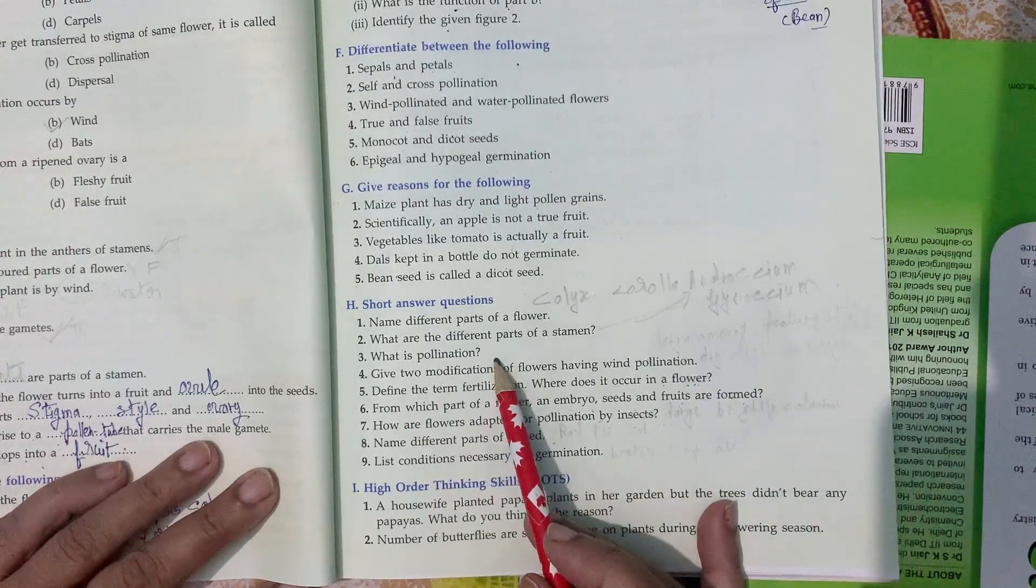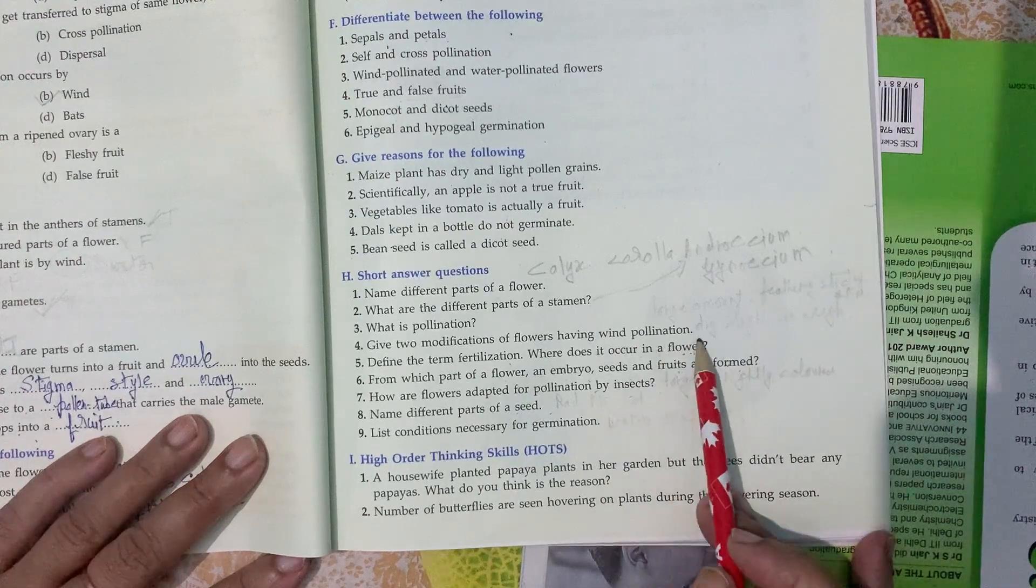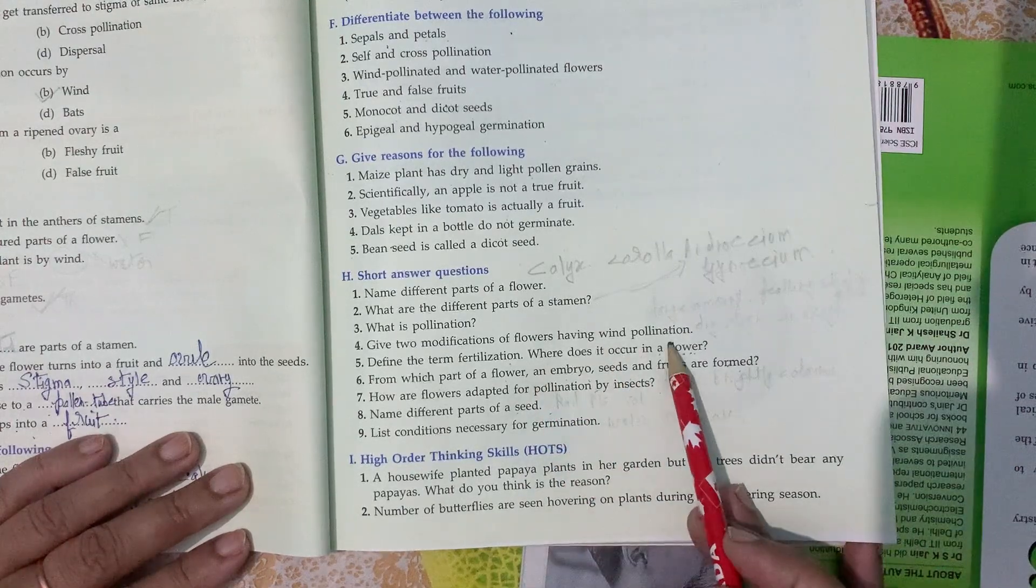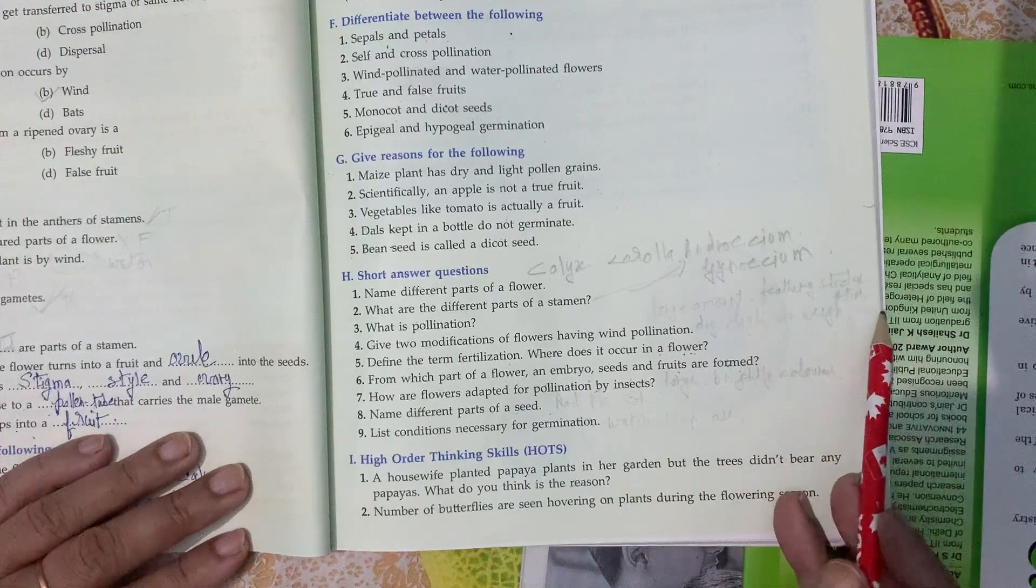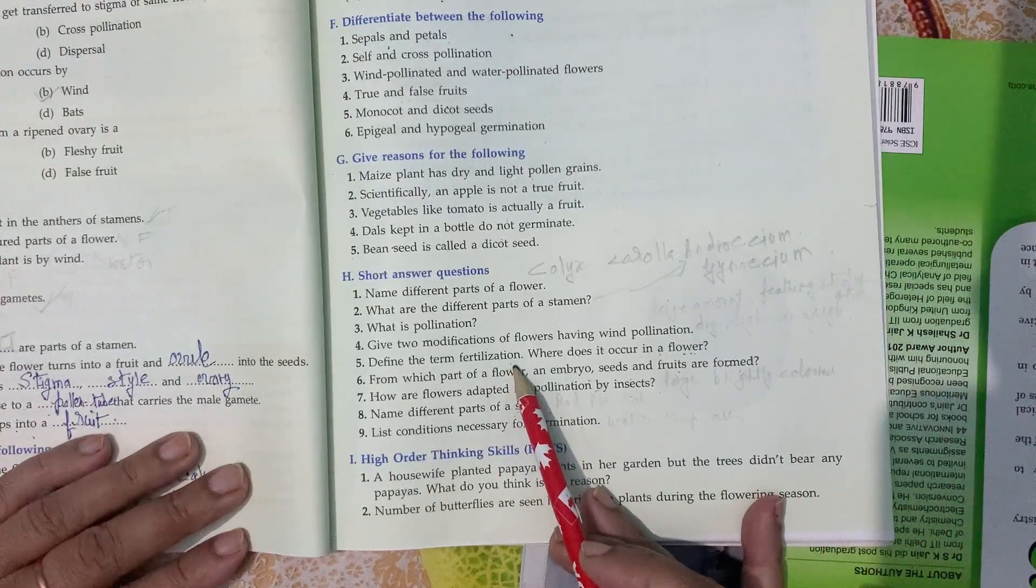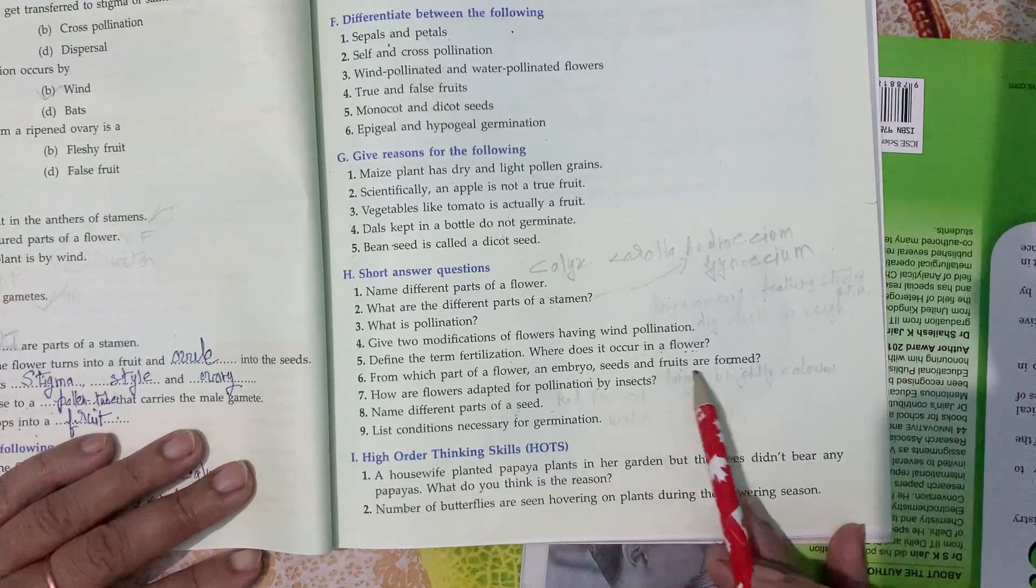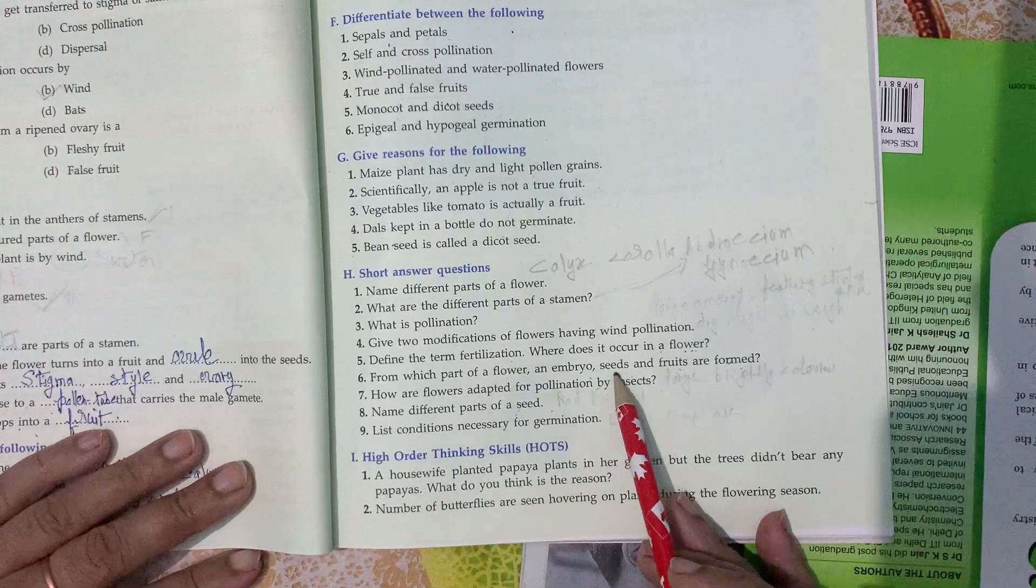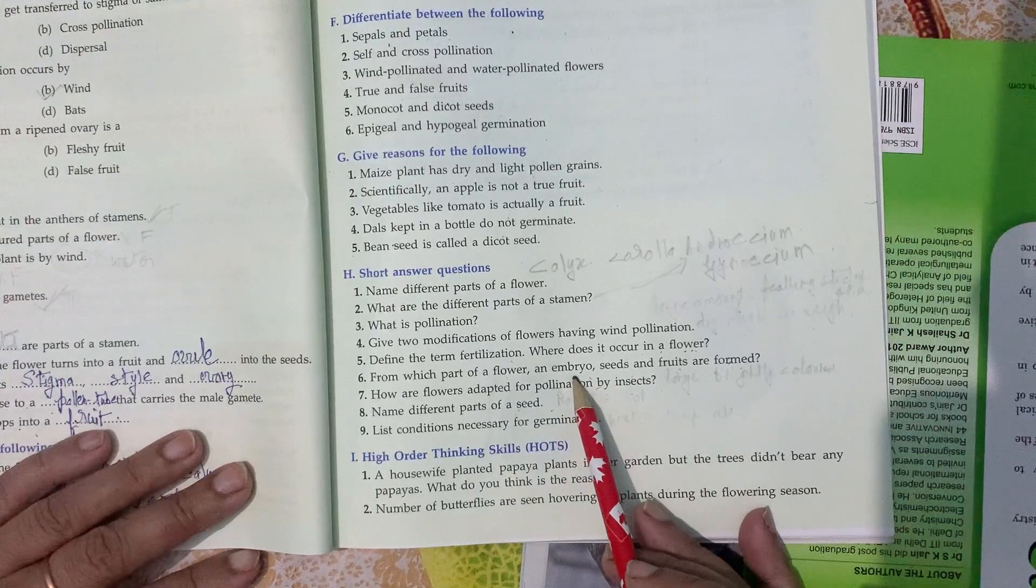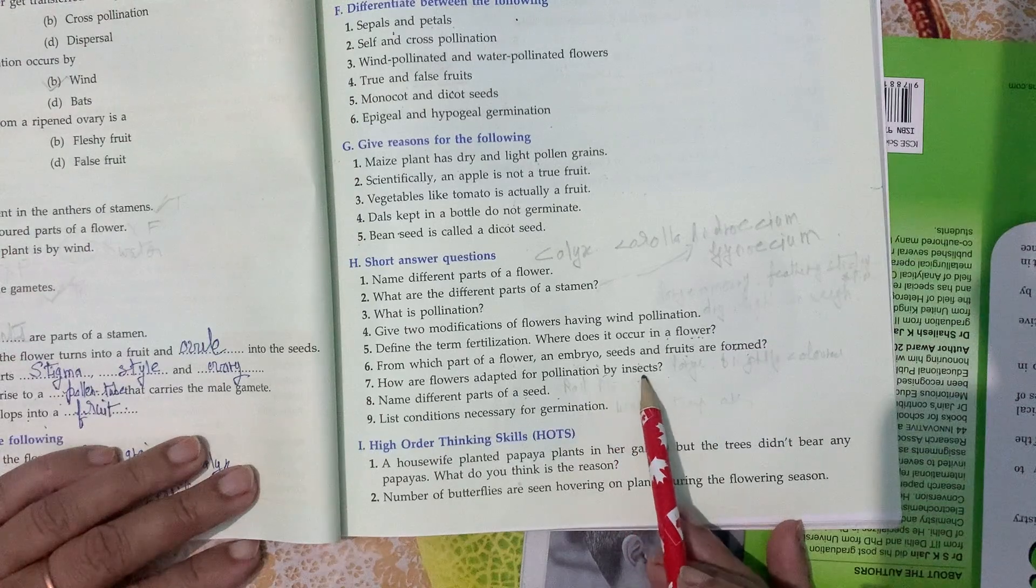Give two modifications of wind pollinated flowers. Stigma is sticky and stigma is feathery. Define fertilization. Fusion of male and female gamete is called fertilization. Where does this occur in a flower? It occurs in the ovary. From which parts are embryo, seed, and fruits formed? Embryo is formed from zygote, seeds from ovule, and fruits from ovary.